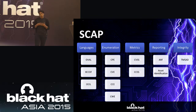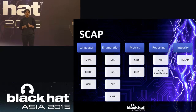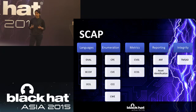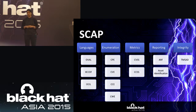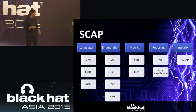For metrics, CVSS is the Common Vulnerability Severity Score, calculated based on access vector, integrity impact, confidentiality impact, and similar factors. CCSS is the configuration severity score — not very common — because every organization measures configuration metrics differently. For reporting, we have Asset Reporting Format and Asset Identification. And for integrity, we have a trust model with digital signatures to ensure content integrity.